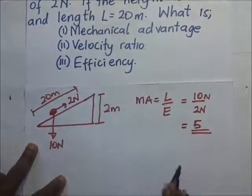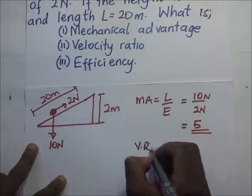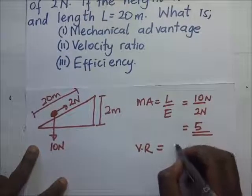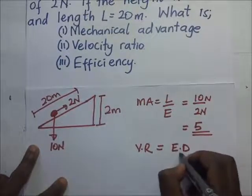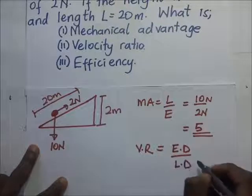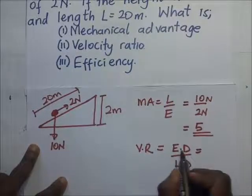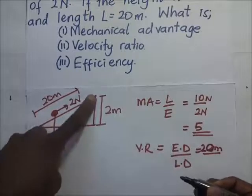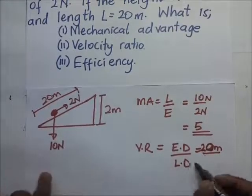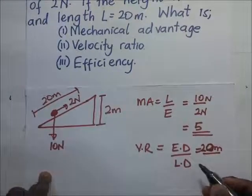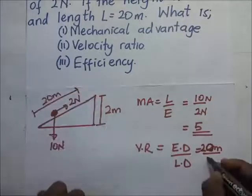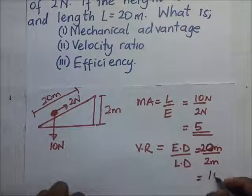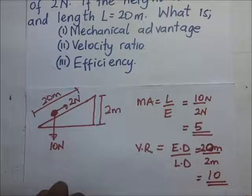Then the velocity ratio. The velocity ratio is equal to the distance moved by the effort divided by the load distance. The effort distance is 20 meters along the inclined plane, divided by the load distance of 2 meters. Therefore the velocity ratio is 10.